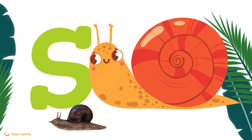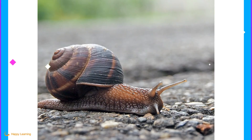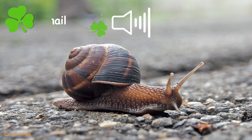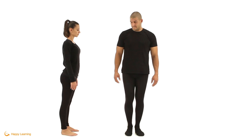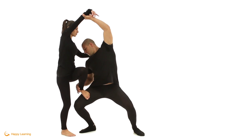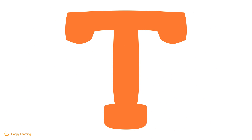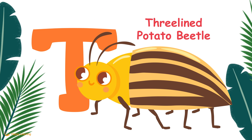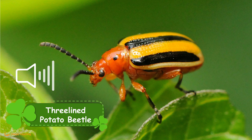S. S is for Snail. Snail. T. T is for Three-Lined Potato Beetle. Three-Lined Potato Beetle.